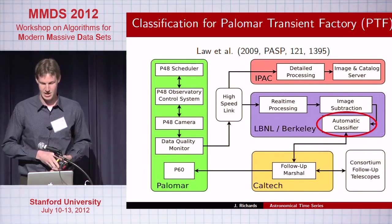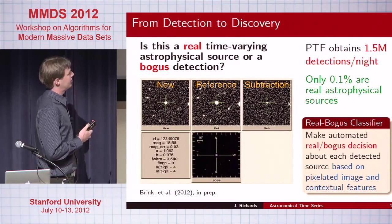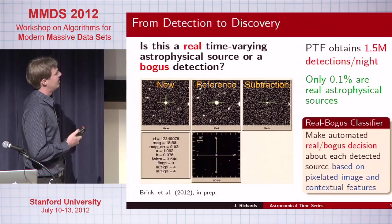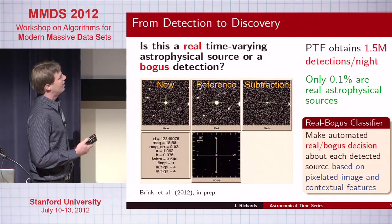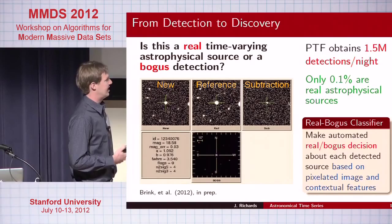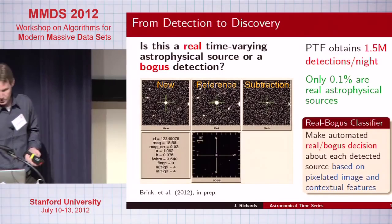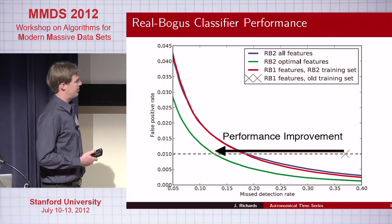The first classification task is the real-bogus problem. These are the types of data sent to us: the new image, the deep reference image, and the subtraction. We have about 1.5 million detections a night — anything popping up over some sigma threshold is flagged — but only 0.1% of those are true astrophysically varying objects. We built a real-bogus classifier based on image plus context features using a random forest, which was the best out of about a dozen classifiers tried. We require a very small 1% false positive rate, and we've decreased the misdetection rate of real objects from 35–40% down to about 10–15%.